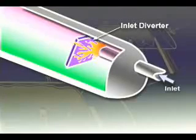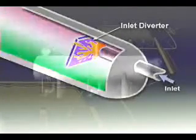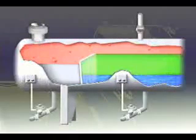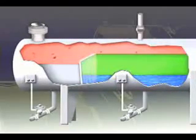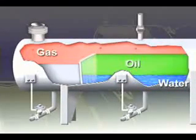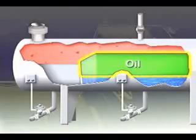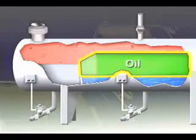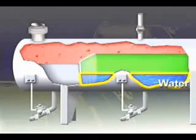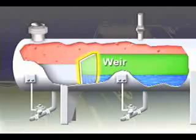In a horizontal separator, fluid enters the vessel and hits an inlet diverter. The resulting sudden change in momentum provides the initial gross separation of liquid and vapor. The liquid collection section of the vessel must provide sufficient time for the oil and emulsion to form a layer or pad above the free water.